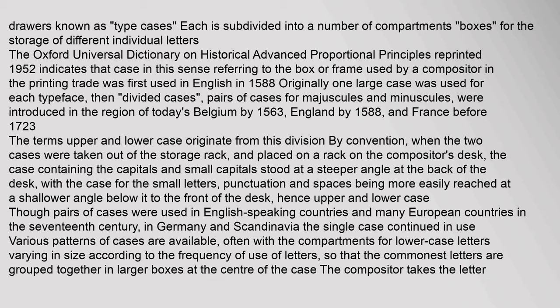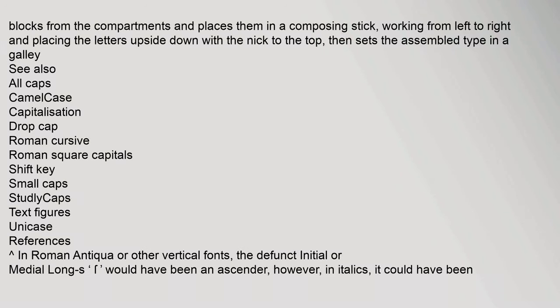Originally one large case was used for each typeface; then divided cases — pairs of cases for majuscules and minuscules — were introduced in the region of today's Belgium by 1563, England by 1588, and France before 1723. By convention, when the two cases were placed on a rack on the compositor's desk, the case containing the capitals stood at a steeper angle at the back, with the case for small letters, punctuation, and spaces at a shallower angle below it — hence 'upper' and 'lower' case.